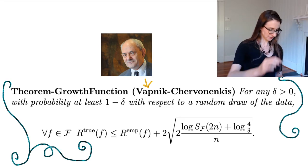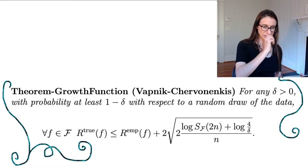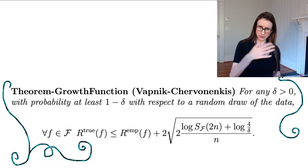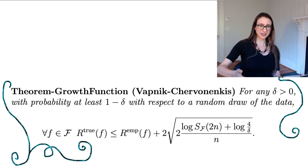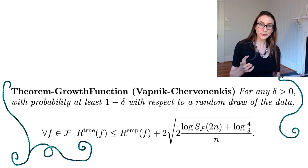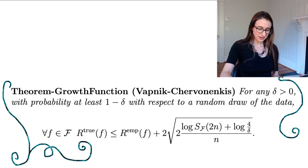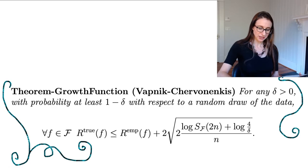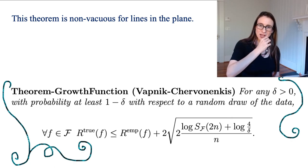The theorem by Vladimir Vapnik says: for any delta greater than zero, with high probability with respect to the random draw of data, for all functions in the class, the true risk is less than the empirical risk plus some term — and that term is finite. Even if the function class is infinite, the growth function is finite. Instead of the log m term from the Occam's razor bound, now we have the growth function.